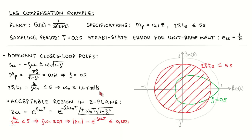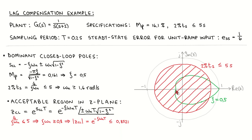The damping of 0.5 corresponds to a spiral in the z-plane as shown in green. The magnitude of the dominant poles in the z-plane is given by e to the power minus the damping times the natural frequency times the sampling period. From the settling time specification we can see that the damping times the natural frequency should be greater than or equal to 0.8. This means that the magnitude of the poles in the z-plane should be less than or equal to 0.8521, which is indicated by this red circle. The acceptable dominant closed loop poles therefore correspond to the part of the green curve that lies within the red circle.